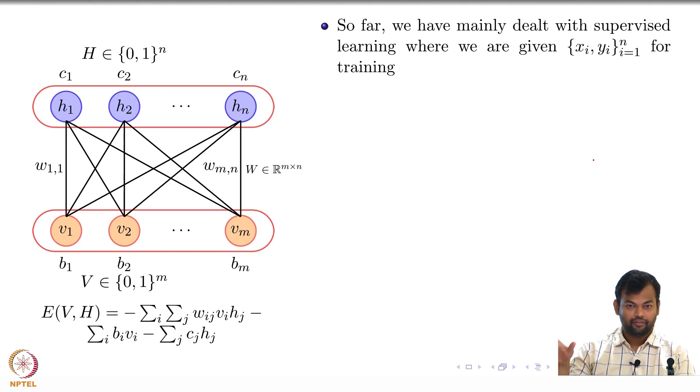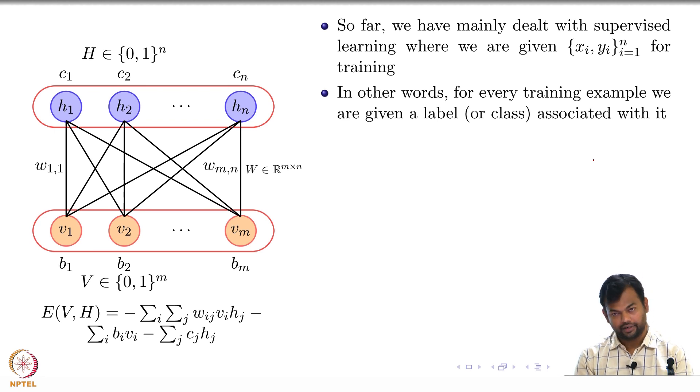So far we have always dealt with situations where we have X_i comma Y_i, and then it was easy to define some kind of objective function. The two popular ones which almost got us through the entire course were squared error loss and cross entropy loss. But now we do not have Ys for the training label examples, we do not have a label associated with.